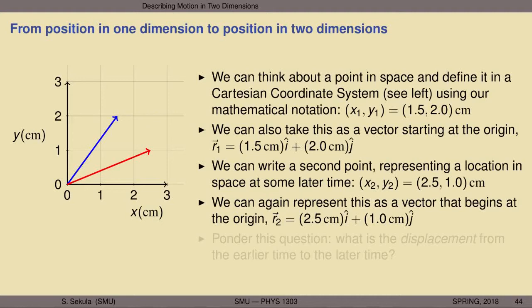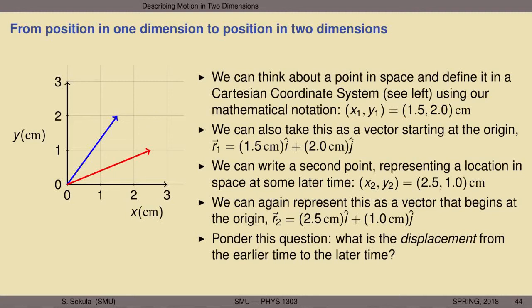Now we have two vectors representing two locations in space. The first location is the position of an object at an earlier time; the second is the position of the same object at a later time. We can ponder the following question: what, in two dimensions, is the displacement from the earlier time to the later time? Try working out the answer for yourself using paper and a writing implement before moving on.